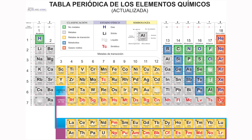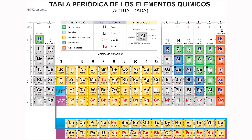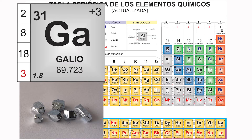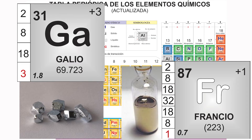Normalmente los metales que forman las aleaciones son los que ves en color amarillo, llamados metales de transición. La característica especial de estos metales es que no necesitan reaccionar con otro elemento químico, son estables por sí mismos. En cambio, los metales normales son más reactivos. Los metales son sólidos a temperatura ambiente, a excepción del mercurio, que a temperatura ambiente se encuentra en estado líquido, o el galio y el francio, cuya temperatura de difusión es de aproximadamente 30 y 27 grados centígrados, respectivamente. Es decir, a estas temperaturas pasan del estado sólido al líquido.